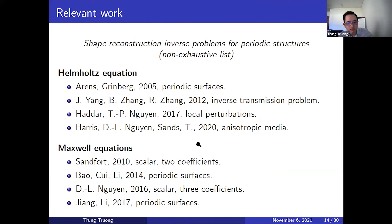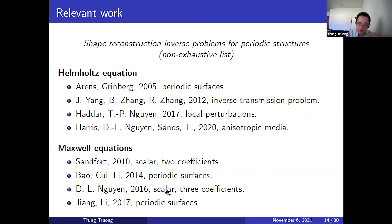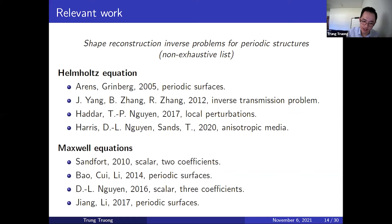Going back to the literature: in 2014 and 2017, Bao, Hu, and Li and also Zhang and Li studied the reconstruction of periodic surfaces. In 2016, we studied the reconstruction of structures characterized by three scalar coefficients. Our current work focuses on the reconstruction of structures characterized by three matrix-valued coefficients — specifically the supports of those functions.